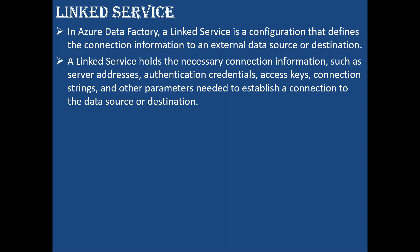Other parameters in the linked service include the type of integration runtime based on the environment, the name of the linked service, and authentication credentials. Based on different authentication methods, we can authenticate with each source and each destination. In real time, if you see multi-factor authentication, we have the Microsoft Authenticator app, an expected call, or a text message with a code. Similarly, whenever you are connecting to any source or destination, there are different authentication methods to connect.